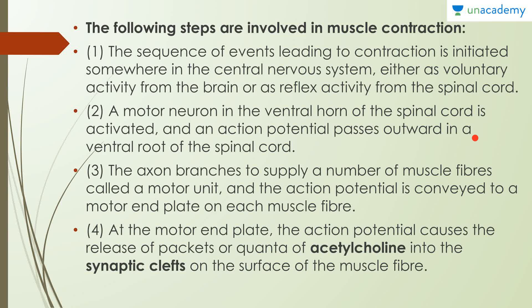For example, if I touch my own hand, this message goes to the ventral horn of the spinal cord where it gets activated. An action potential is generated and the axon branches out to supply a number of muscle fibers — this area is known as a motor unit. This action potential is conveyed to a motor end plate on each muscle fiber, where small packets of acetylcholine are released into the synaptic cleft on the surface of the muscle fiber.